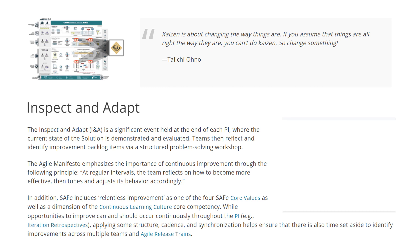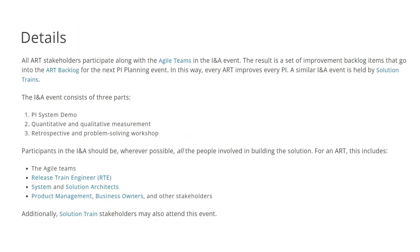While opportunities to improve can and should occur continuously throughout the PI — for example, iteration retrospectives, applying kanbans and synchronization — this helps ensure that there is also time set aside to identify improvements across multiple teams and agile release trains. All ART stakeholders participate along with the agile teams in the I&A event. The result is a set of improvement backlog items that go into the ART backlog for the next PI planning event.